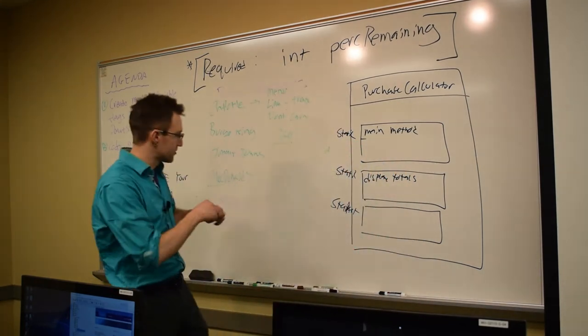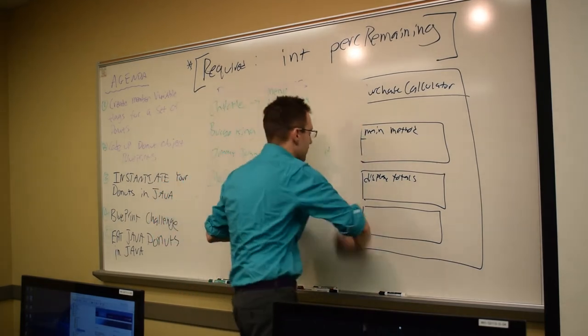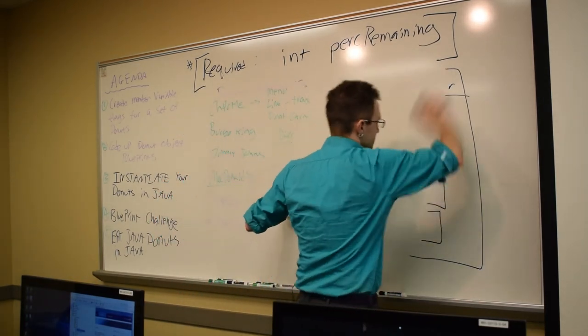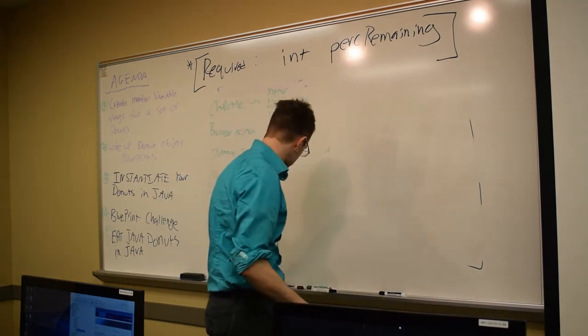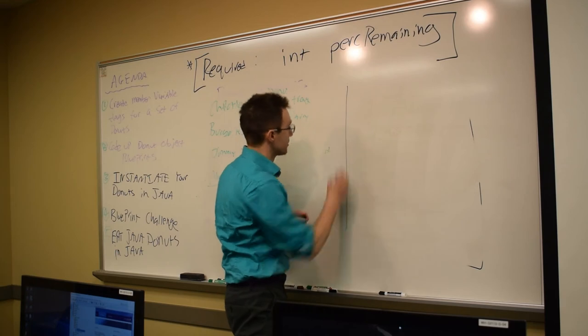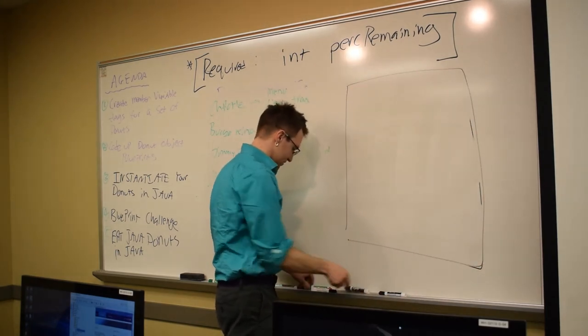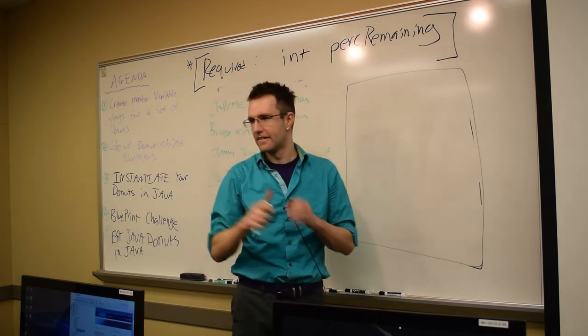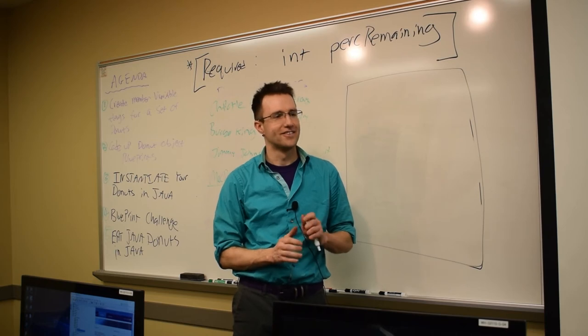And so what we're going to build is we're going to build the blueprint version of our Java donuts. So we can think about it like this. We only, how many blueprints do we have for a building? Think conceptually here. Multiple. At least 10.